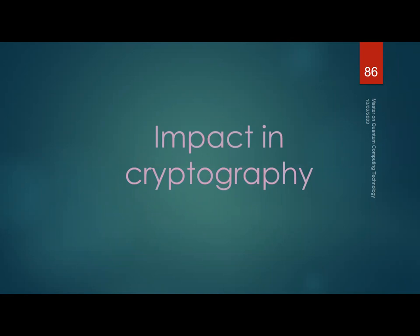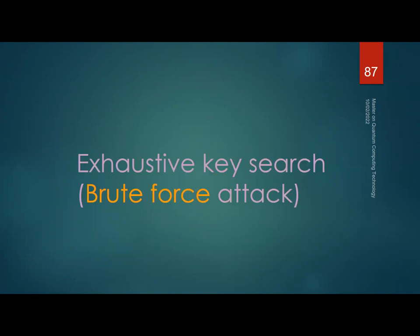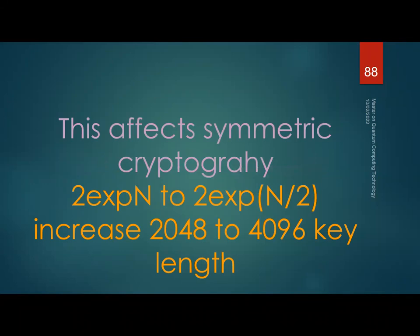The impact on cryptography occurs during a brute-force exhaustive key search. Grover's algorithm reduces the search space from 2^n to 2^(n/2). This affects symmetric cryptography, but it's not so worrying because you can simply double your key length to restore your security level. No one is particularly worried about AES right now.